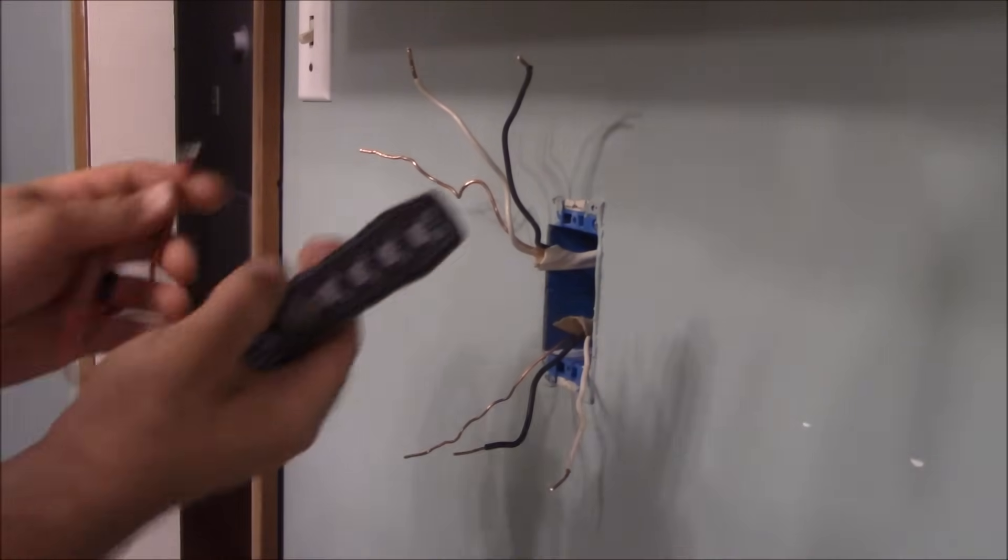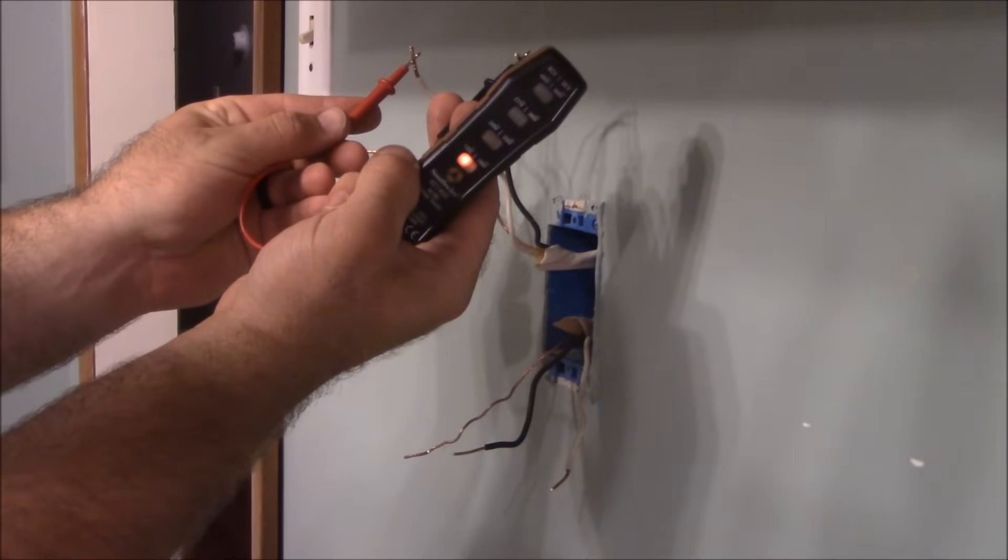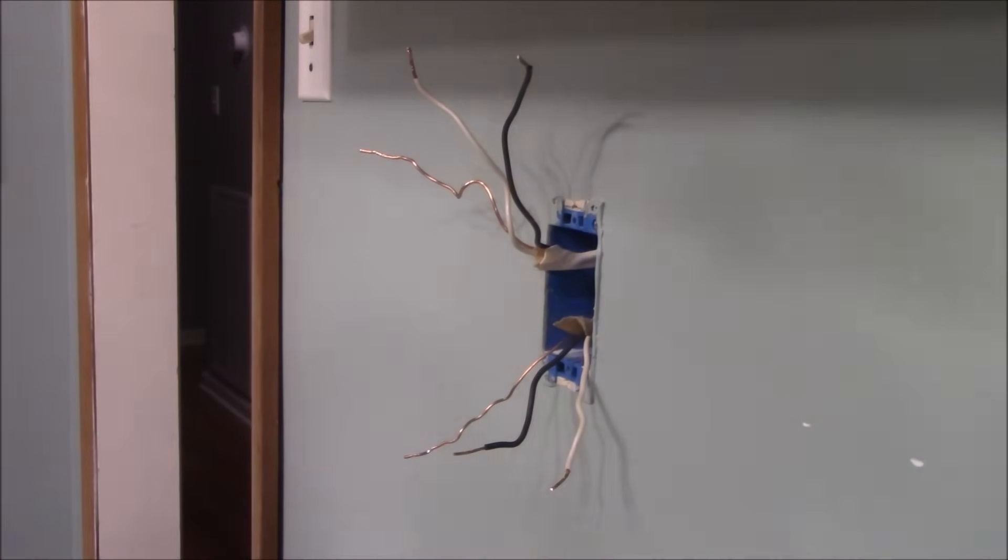On the top here, as you can see, this light comes on. That means that part's the line side. That's where you need to hook that up to. Now, you need to make sure that you turn the power back off before you go any further.